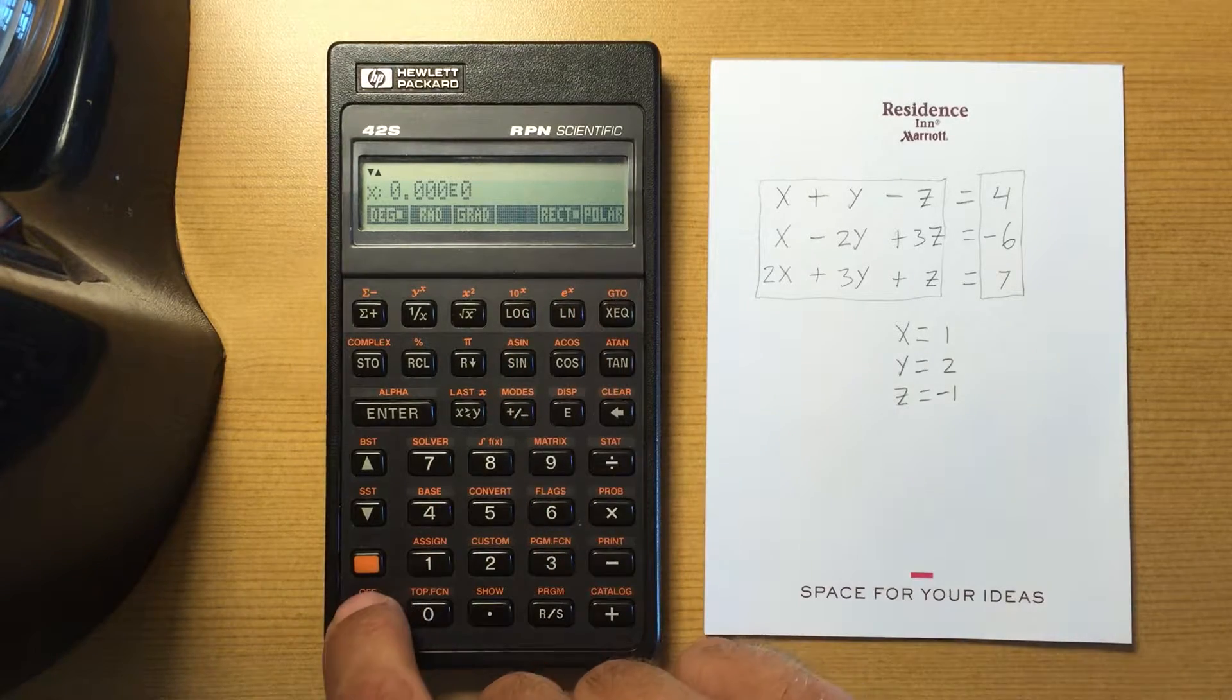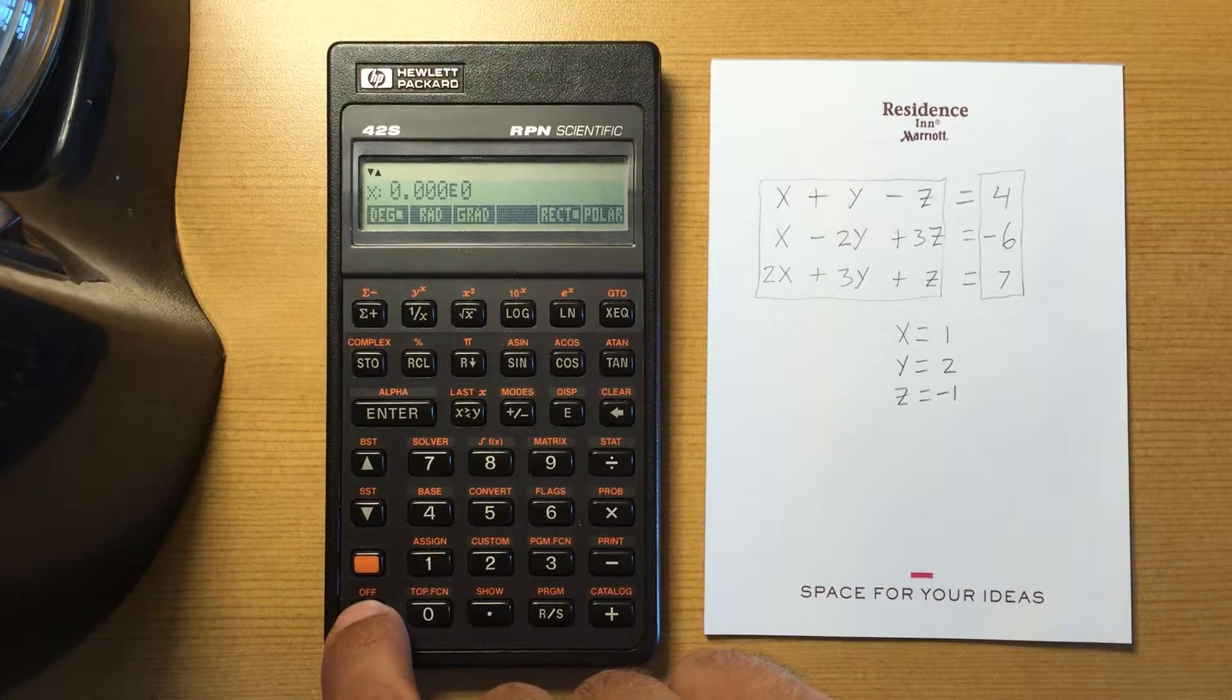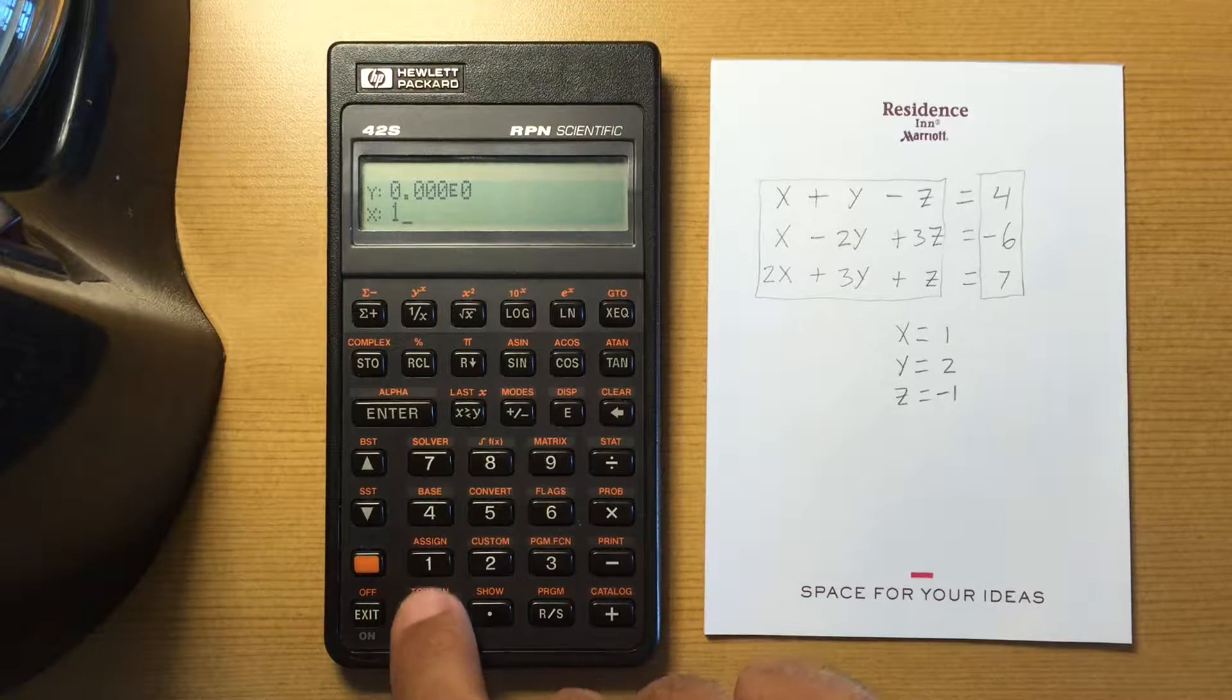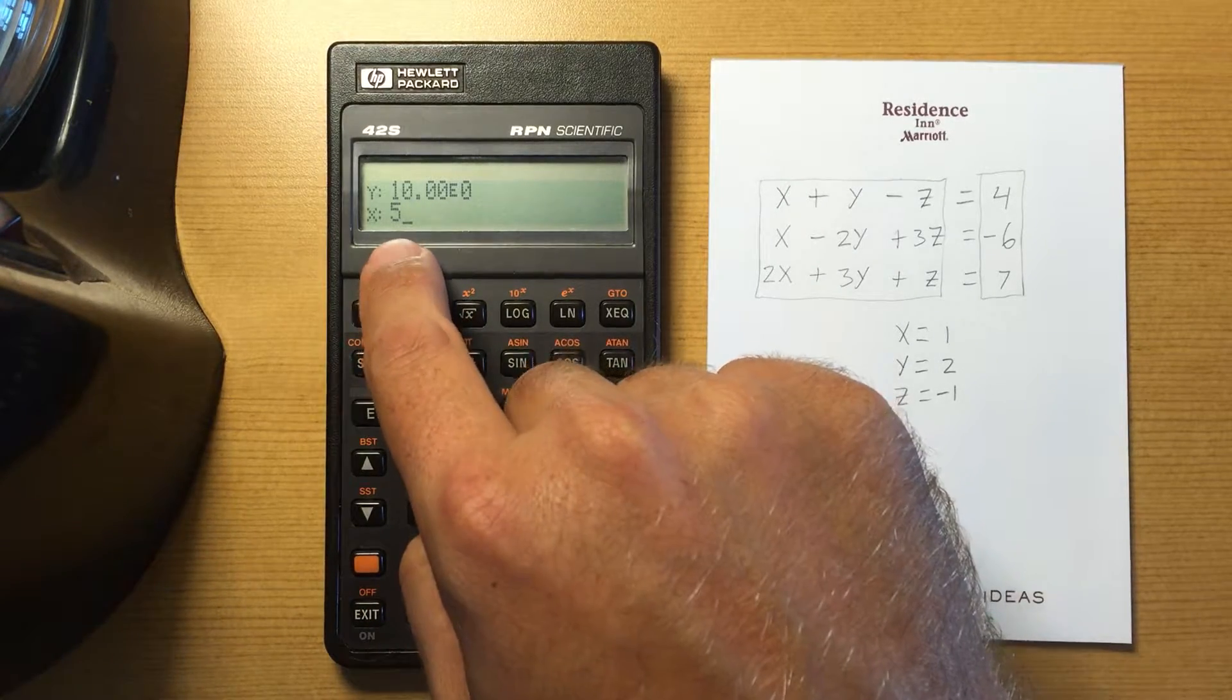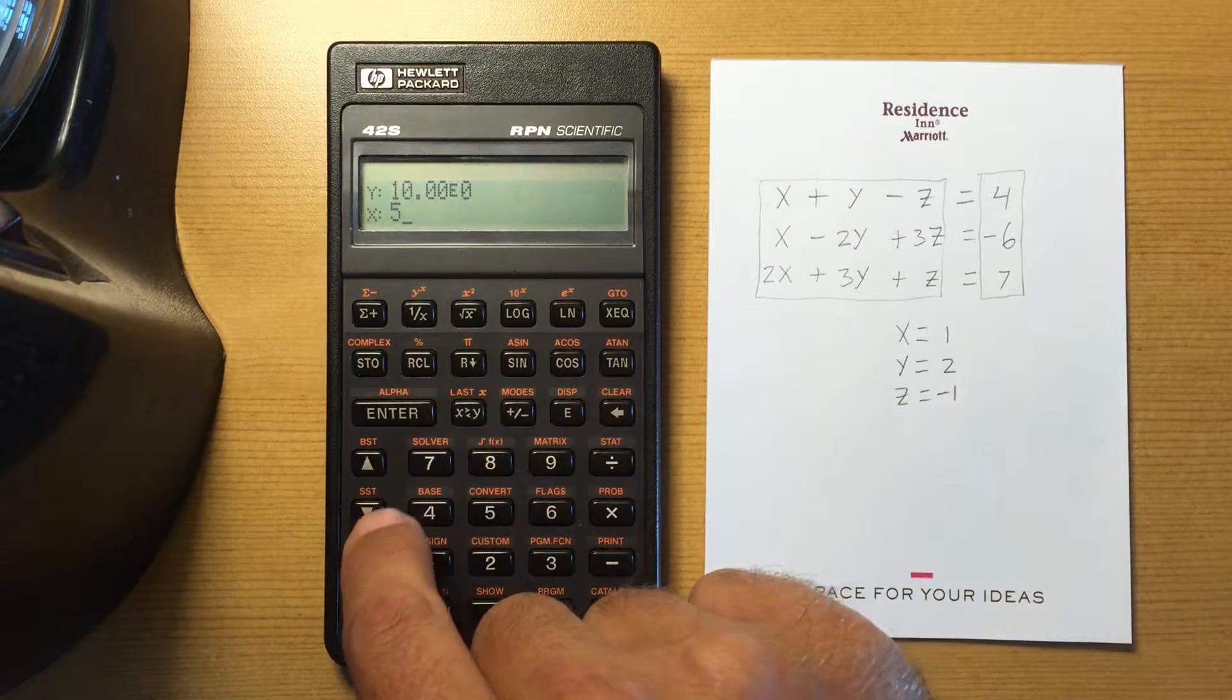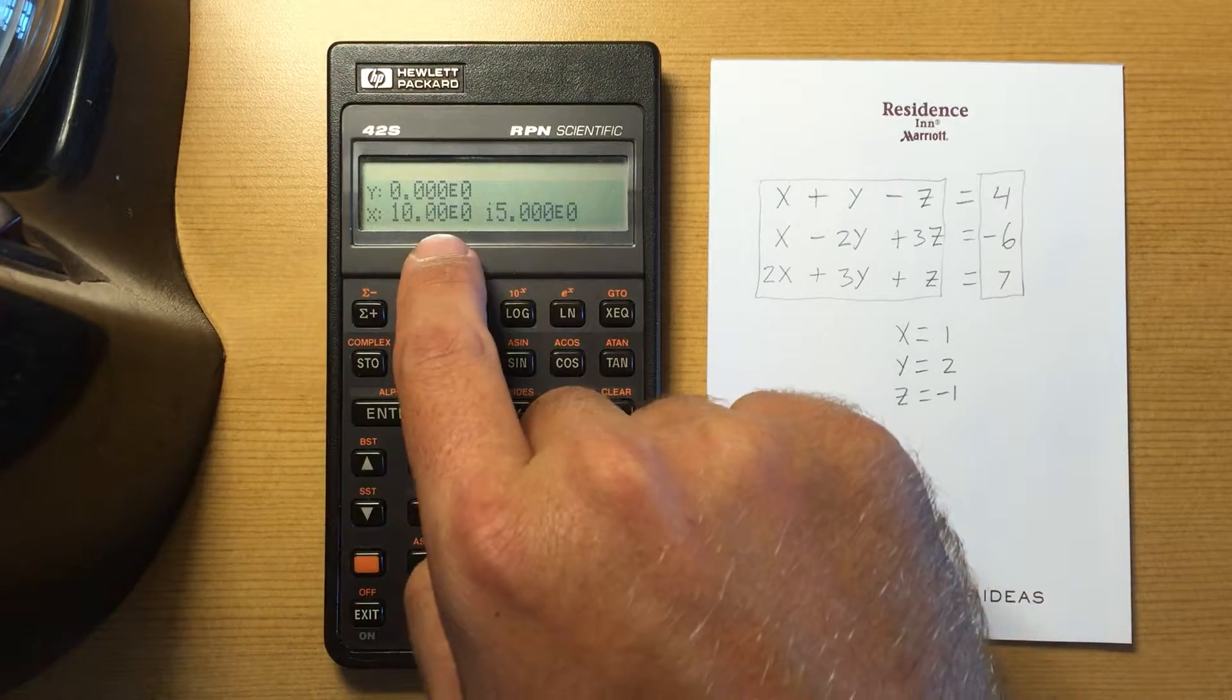So right now it's in rectangular. So if I do ten enter five, so now I'm doing five plus i ten. If I do complex then it shows me five plus, I'm sorry, ten plus i five.